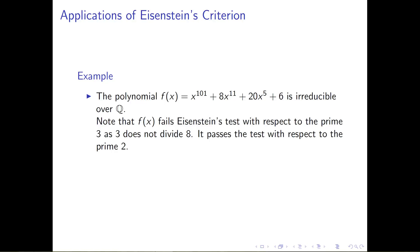The next thing I need is for that prime to divide all of the coefficients of the remaining terms. My remaining coefficients here are 8, 20, and 6. I'm looking for a prime that divides all three of those, and the prime 2 works. And the last thing I need is that the square of that prime — which is 4 for prime 2 — does not divide the constant term. The constant term is 6, so no problems. We see that f of x passes Eisenstein's test with respect to the prime 2.